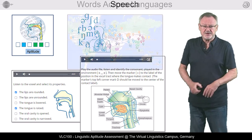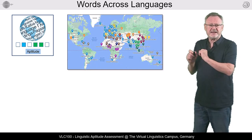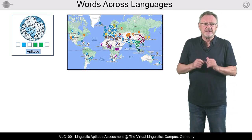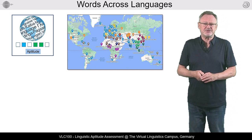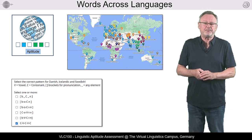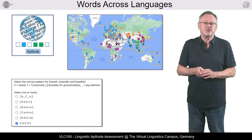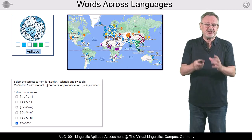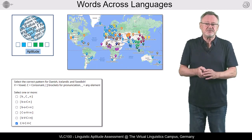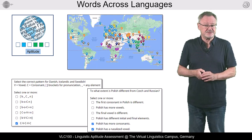The test Words Across Languages makes use of the VLC Language Index and allows you to compare the pronunciation of so-called cognates — that is, words with the same or a similar meaning across languages.